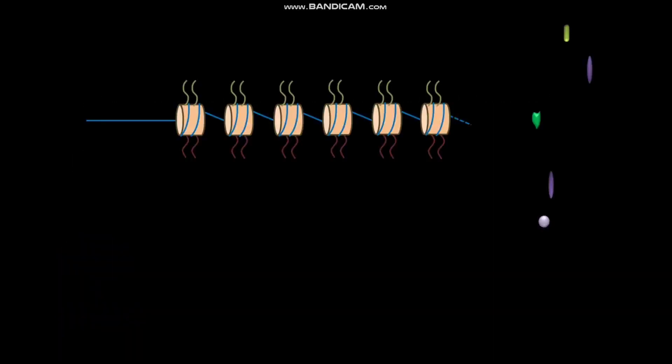In yeast, telomeric DNA has no nucleosomes. This telomeric DNA has a simple repeated sequence, and to this simple repeated sequence, multiple copies of RAP1 bind.